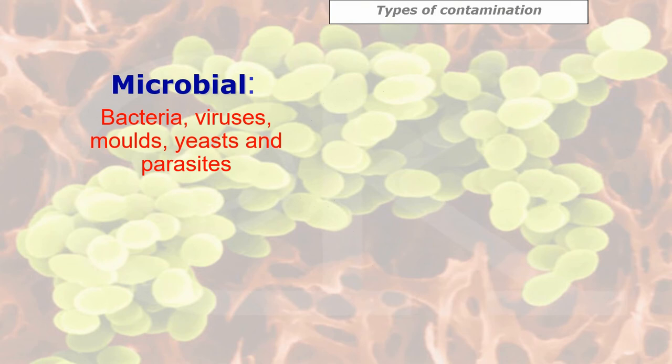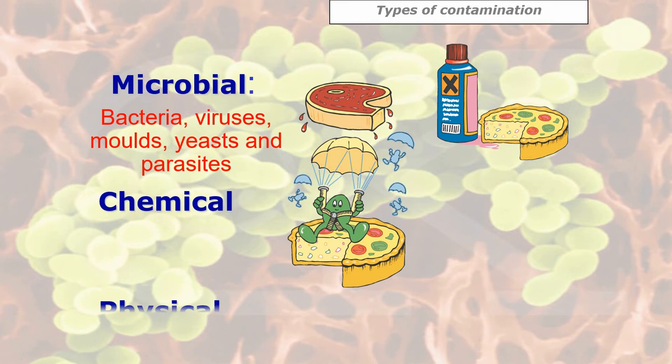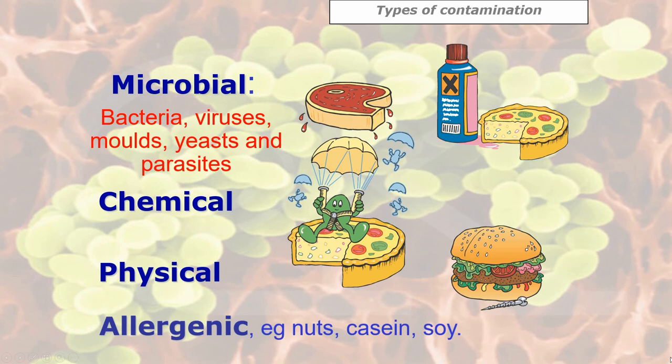Let's look at the types of contamination. First, microbial contamination is caused by microscopic organisms — bacteria, viruses, moulds, yeasts, and parasites — which are difficult or impossible to see. Then you have chemical contamination. Then physical contamination, such as items you can see — for example a screw, which could be a food safety hazard, or something more innocuous like a piece of plastic or string. And lastly, allergenic contamination — for example nuts, casein, soy, or any of the 14 allergens.